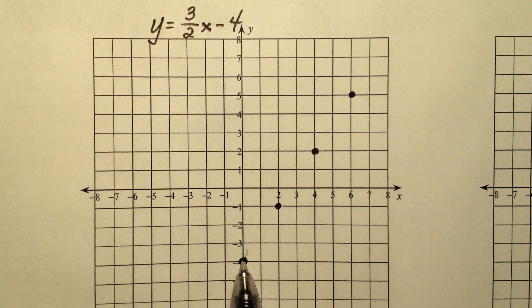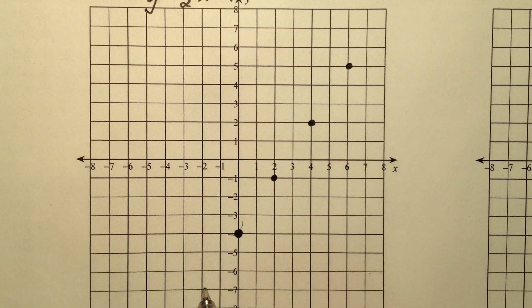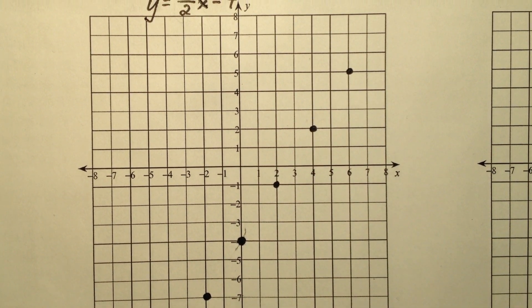Of course, if you wanted to, we could also go back the other way, and we could go down 3 and back 2, and all those points you'd see are going to be collinear.